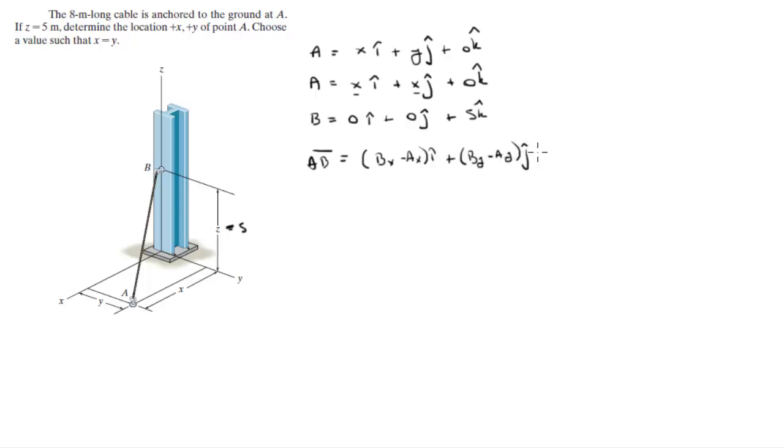Which equals negative X*i minus X*j plus 5*k, because B's X-component is zero and A's is X, so it's negative X. Same thing for Y. And 5 because it's 5 minus 0.